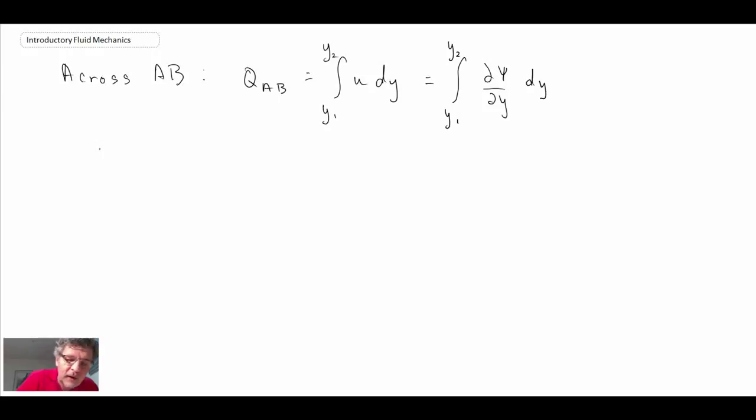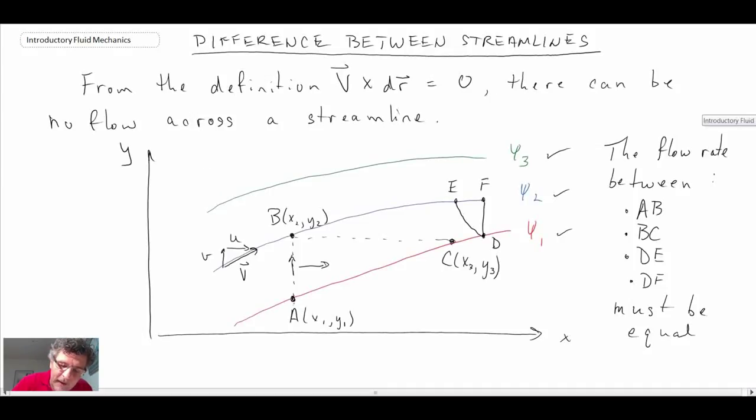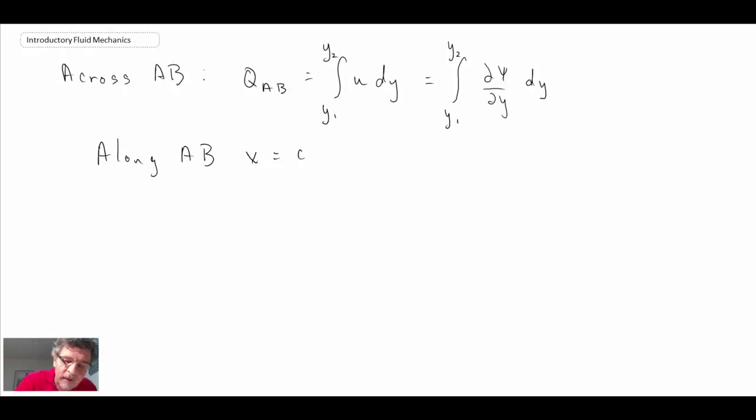Along AB, the other thing that we know is that the value of x is equal to a constant along line AB. If we look at the total derivative of psi, and we saw this in the last segment, we can express it this way in terms of partials.